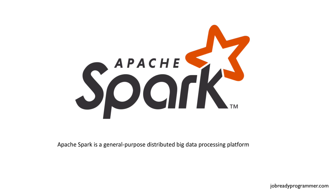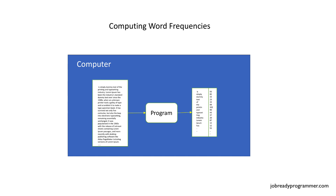The example typically presented to explain how big data technologies work is the word count problem. Let's say that you have a file containing words from an article or a book. If you needed to get the total count of occurrences of each word, for small files this should be a trivial task. You just need to write a program that increments a counter for each word and store the words and their frequency counts into a hash map or similar data structure. Simple enough.